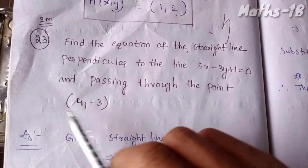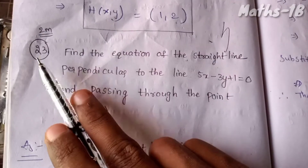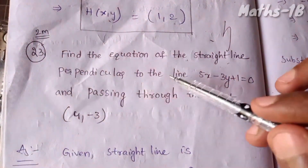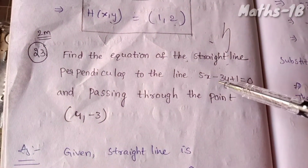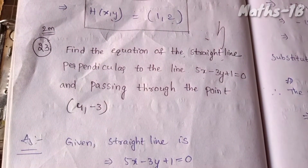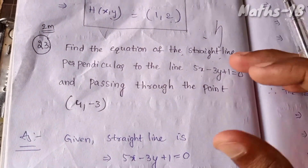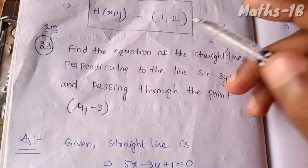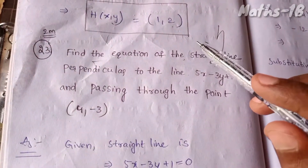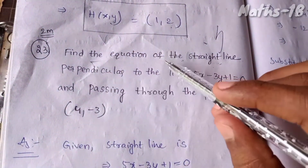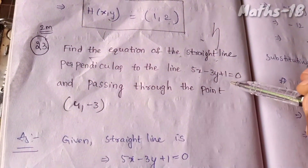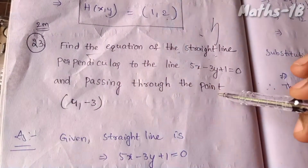Hi friends. Next two marks question: Find the equation of the straight line perpendicular to the line 5x minus 3y plus 1 is equal to 0 and passing through the point (4, minus 3).